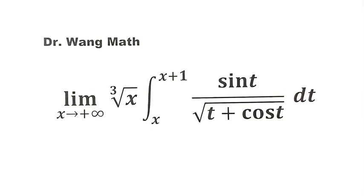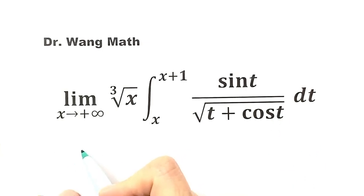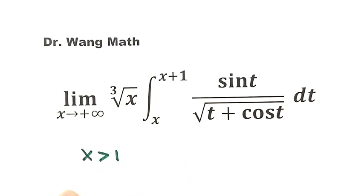In this video, we are going to solve this limit problem. How do we find the limit of this function? Because under the square root we have cosine t, and cosine takes values between negative 1 and 1. To ensure what's under the square root is bigger than zero, we are going to consider x bigger than 1. Because x goes to plus infinity, it's reasonable to consider this.